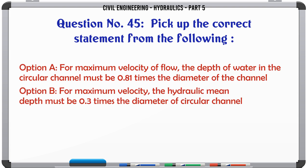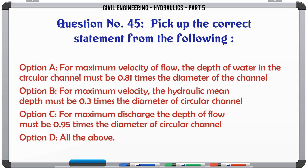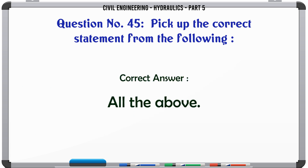Pick up the correct statement from the following: A. for maximum velocity of flow, the depth of water in the circular channel must be 0.81 times the diameter, B. for maximum velocity the hydraulic mean depth must be 0.3 times the diameter of circular channel, C. for maximum discharge the depth of flow must be 0.95 times the diameter of circular channel, D. all the above. The correct answer is all the above.